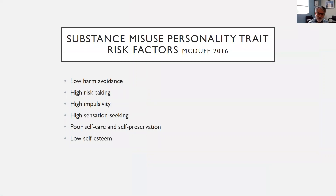There are substance misuse personality traits that are risk factors for addiction, from Dave McDuff: low harm avoidance, high risk taking, high impulsivity, high sensation seeking, poor self-care and self-preservation, and low self-esteem. People may say they have an addictive personality — I don't like that term — but there are traits that can predispose someone to having addictive behavior.